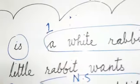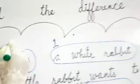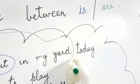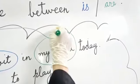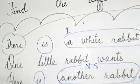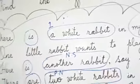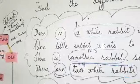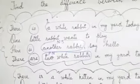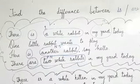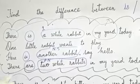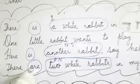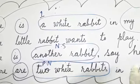Now what about 'there'? Why is 'there' used here? 'There' shows the yard — yard is this place. 'There' indicates a place. How many rabbits do we have? 'There are two white rabbits in my yard today.'